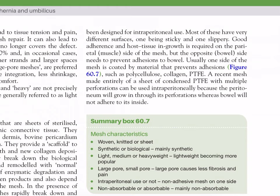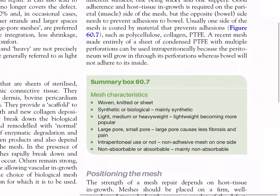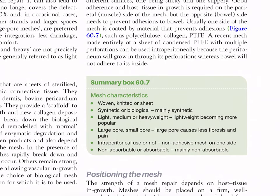One side of the mesh is usually coated with material that prevents adhesions, such as polycellulose, collagen, or PTFE. A recent mesh made entirely of condensed PTFE with multiple perforations can be used intraperitoneally because the peritoneum will grow in through its perforations whereas bowel will not adhere to its inside. Mesh characteristics summary: woven, knitted, or sheet; synthetic or biological (mainly synthetic); light, medium, or heavy weight (lightweight becoming more popular); large-pore or small-pore (large pore causes less fibrosis and pain); intraperitoneal use or not; non-adhesive mesh on one side; non-absorbable or absorbable (mainly non-absorbable).